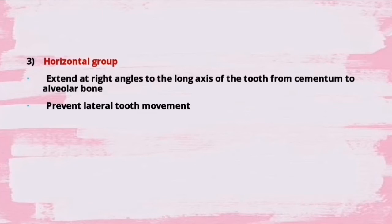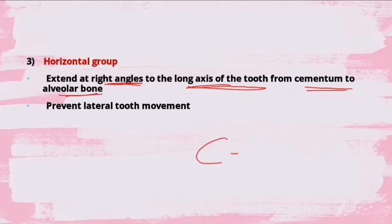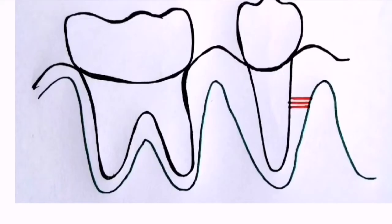The third group is the horizontal group of fibers. They extend at right angles - 90 degrees - to the long axis of the tooth, from cementum to the alveolar bone, and they prevent lateral tooth movement. As the name suggests, they run horizontally from the cementum to the alveolar bone perpendicular to the tooth surface.